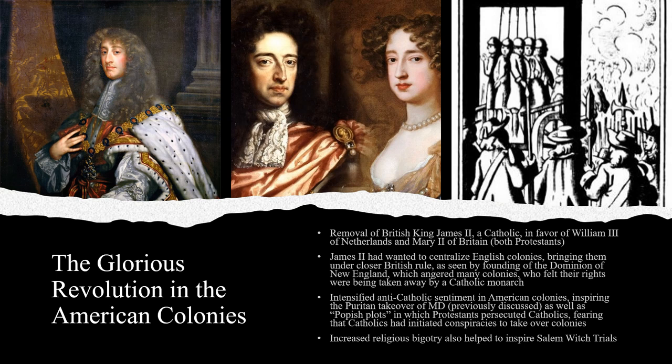James II would be forced out of England during the Glorious Revolution of 1688 and 1689, and England would be taken over by Mary II, James' daughter, and William III, King of the Netherlands. The Glorious Revolution spilled over into the American colonies, helping to inspire the Puritan takeover of Catholic Maryland. While some people might see the Glorious Revolution as a hostile Dutch takeover of England, the English colonists tended to support William and Mary because of their Protestant bona fides and their transformation of the English crown into a constitutional monarchy. In spite of the Protestant victory during the Glorious Revolution, English colonists remained hypervigilant, fearing Catholics and Popish plots to take over their colonies.